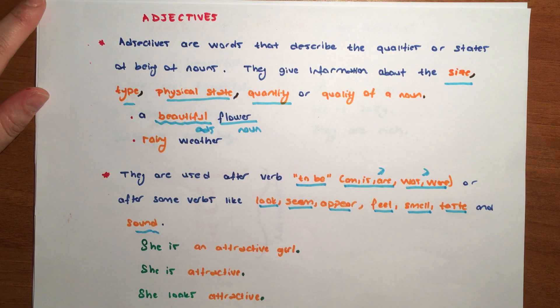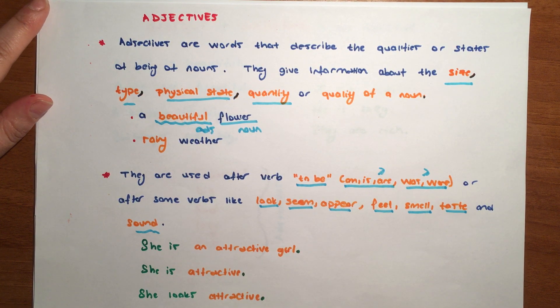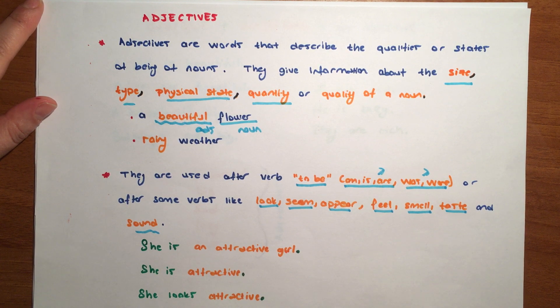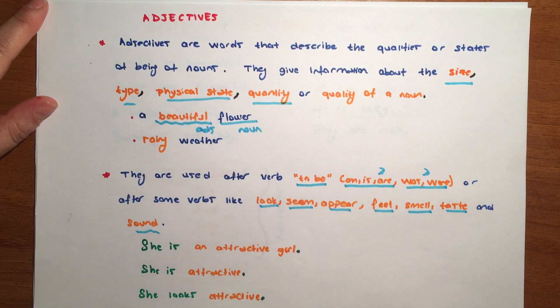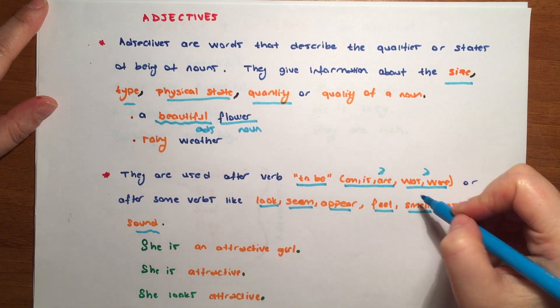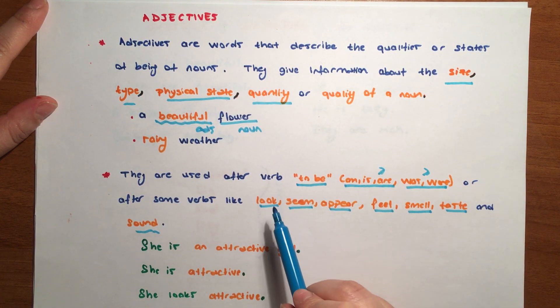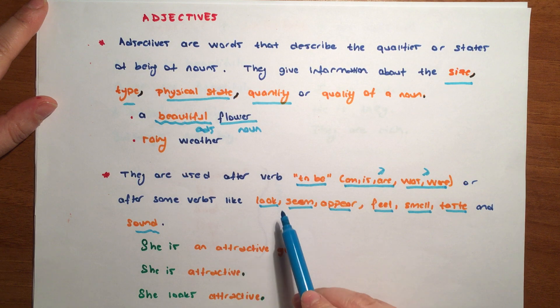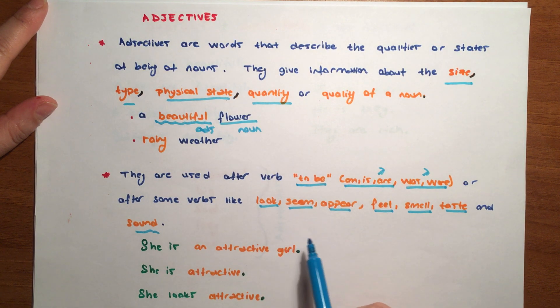As we learned before, after am, is, are we used to use nouns. Now what will we use? We will use adjectives. We'll see how they're used. Adjectives are generally used after to be verbs, meaning am, is, are, or its past form was, were.